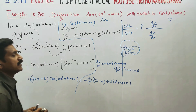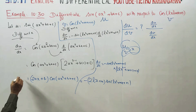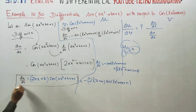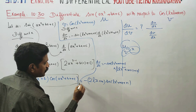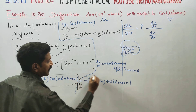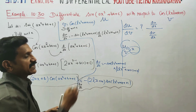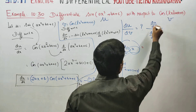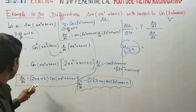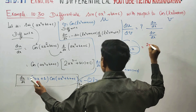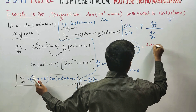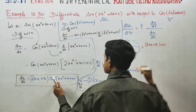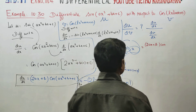Therefore dv by dx = -sin(lx² + mx + n) × (2lx + m). Now combining the two results for the main sum: du by dv = du by dx divided by dv by dx. The numerator is (2ax + b) cos(ax² + bx + c).